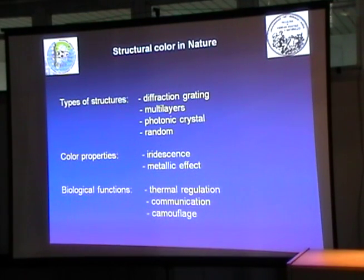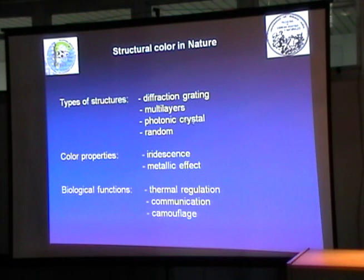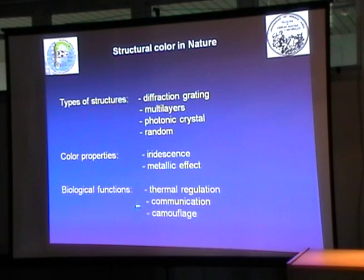In this part of the lecture, I will tell you about different kinds of structures that can generate structural color. Among them there are diffraction gratings, multilayers, photonic crystals, and random structures like the white beetles. Then we will discuss a little bit about the properties of color, such as iridescence and the metallic effect, and I will comment about the biological functions.